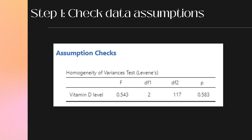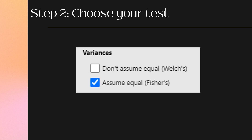Step 1: Check the data assumptions. There's our p-value. Levene's test is not significant — perfect. We can do our normal standard ANOVA F-test. Step 2: Run our test. Here we are doing a standard ANOVA F-test, so we turn it on.